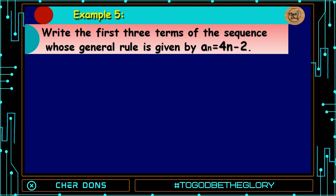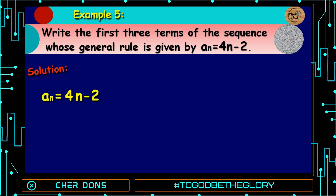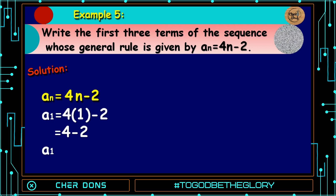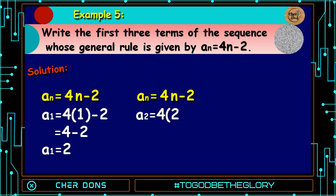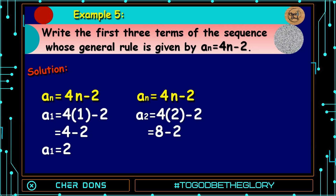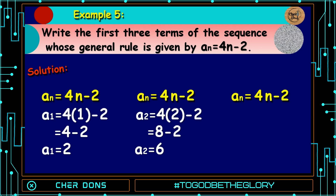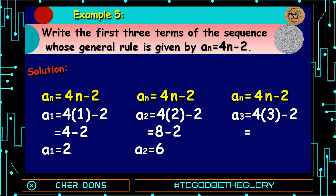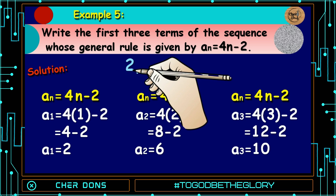Example number 5: Write the first 3 terms of the sequence whose general rule is A sub n is equal to 4n minus 2. Solving for A sub 1, substituting n by 1: A sub 1 is equal to 4 multiplied by 1 minus 2, that is 4 minus 2, so A sub 1 equals 2. Solving for A sub 2, substituting n by 2: A sub 2 is equal to 4 multiplied by 2 minus 2, that is 8 minus 2, so A sub 2 equals 6. Solving for A sub 3, substituting n by 3: A sub 3 is equal to 4 multiplied by 3 minus 2, that is 12 minus 2, so A sub 3 equals 10. Therefore, the first 3 terms of the sequence are 2, 6, and 10.